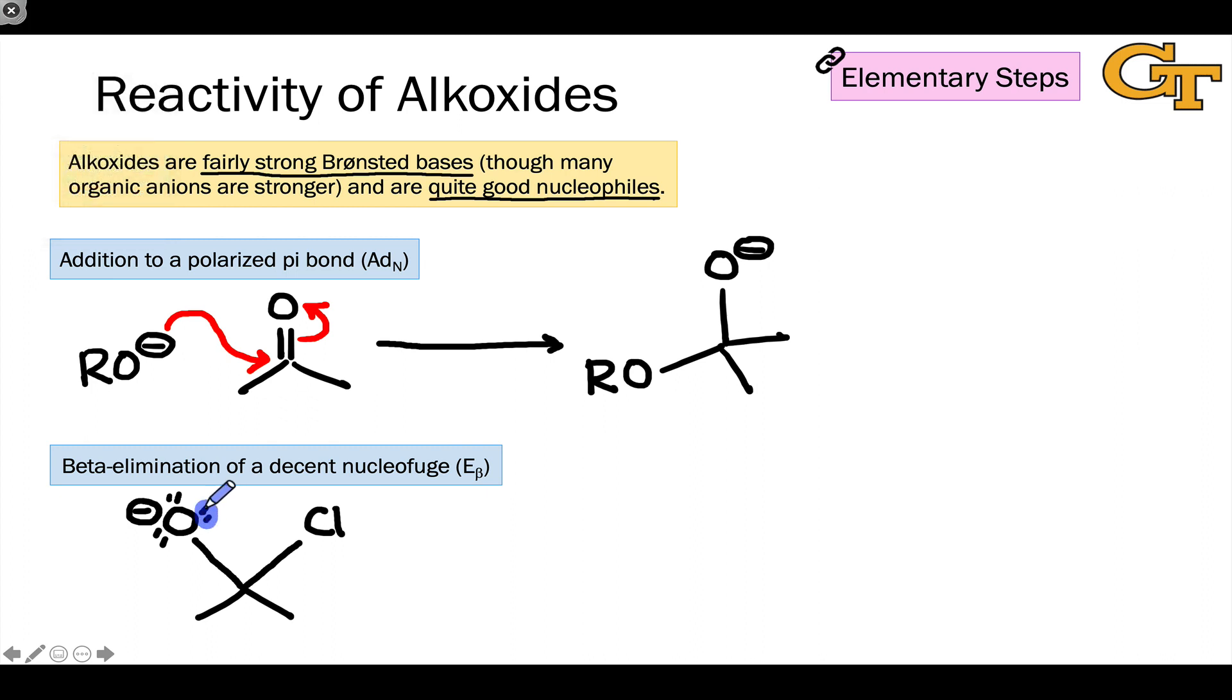This arrangement of a good nucleophilic lone pair adjacent to a good nucleofuge is exactly what we need for beta elimination elementary step. And after that occurs, we end up with products containing a new carbon-oxygen double bond, as well as the conjugate base of the leaving group, Cl⁻.